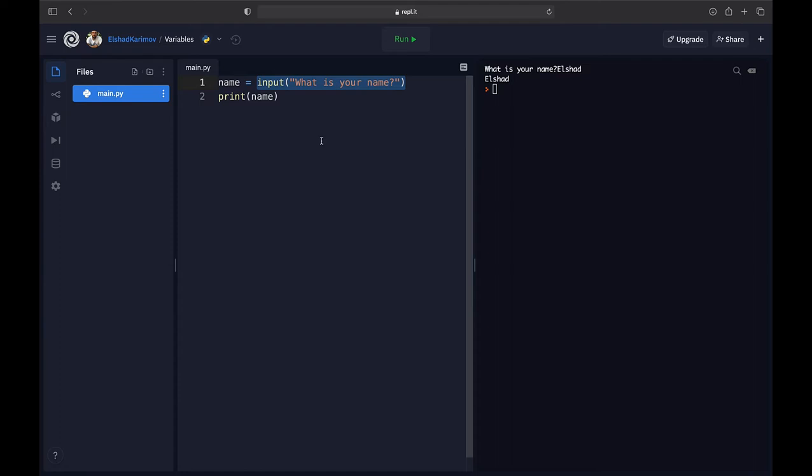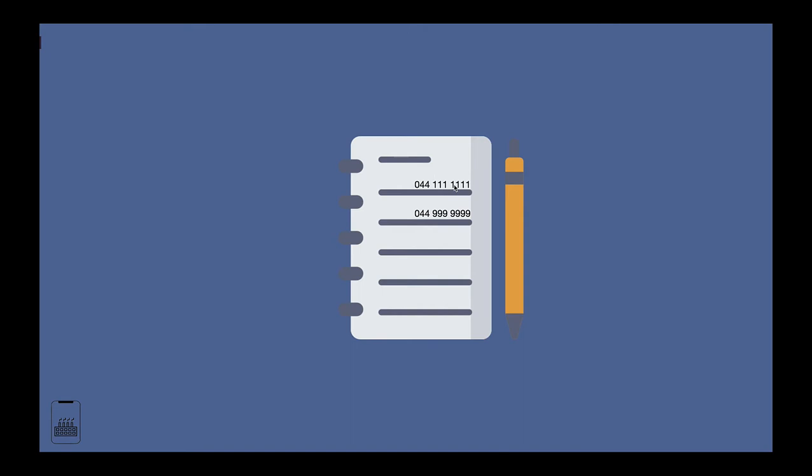By using variables, we can save information for future use in our programs. Think of it like a phone book — if you just write numbers in your phone book without a name attached, the next time you open it you can't find a person's number. In the same way, even though we've input data into the program, there's no way to refer to it unless we give it a name. In a phone book we'd say this number belongs to Ershad, and this number belongs to Renard — those names are the variables.